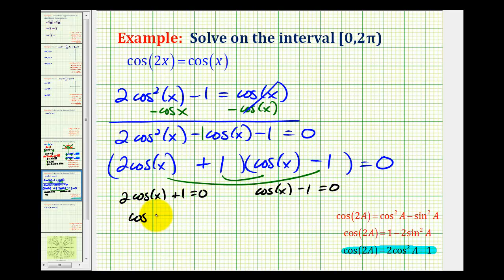If we solve this for cos(x) we'll have cos(x) = -1/2. Here we'll add 1: cos(x) = 1.